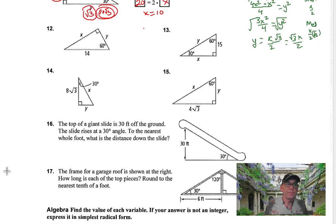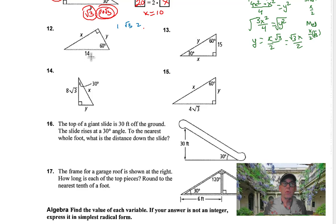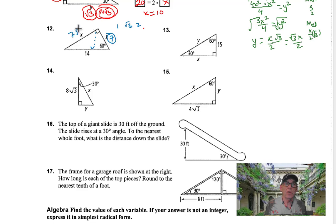For number 12, they're giving us that this side is 14. In a 30-60-90, the hypotenuse is double the short side. This hypotenuse is 14 — it's the longest side, opposite the right angle. So the short side Y must be 7. Then the medium-sized side is the short side times root 3, which gives us 7 root 3.